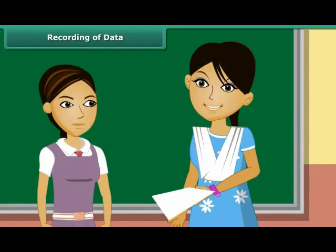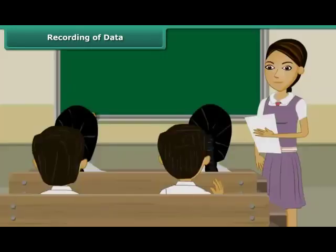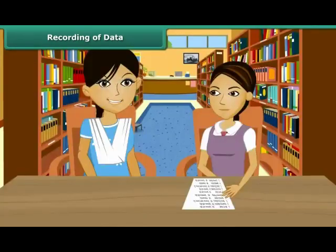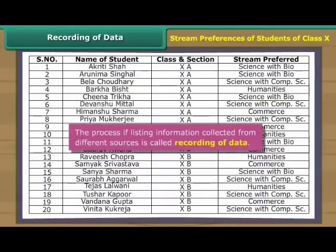Recording of data: Mrs. Sandeep is the academic in charge. She has assigned Sheetal the task of writing the stream preference of all class 10 students. Sheetal collects all requisite details, summarizes them in a single sheet, places it in a file and hands the file over to the academic in charge. The process of listing information collected from different sources is called recording of data.